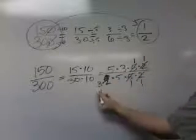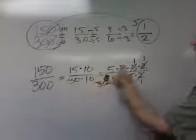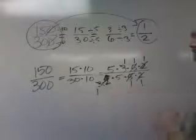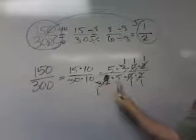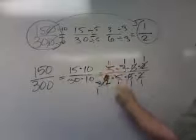And then do we have any others? Yeah, here's a 3 and here's a 3. So this 3 over this 3 is equal to 1 over 1. And then there's even more. Look at this. Here's a 5 and here's a 5. So 5 over 5 is equal to 1 over 1.